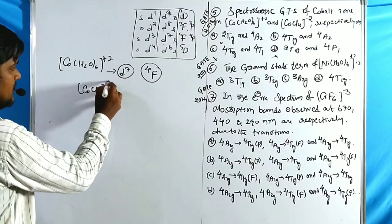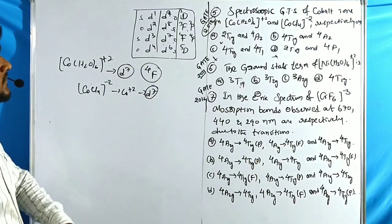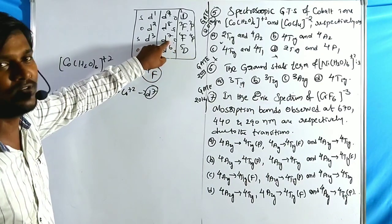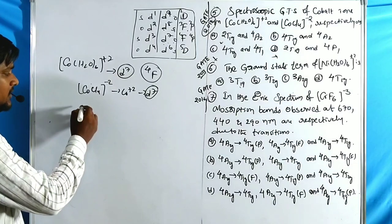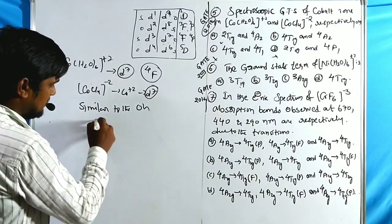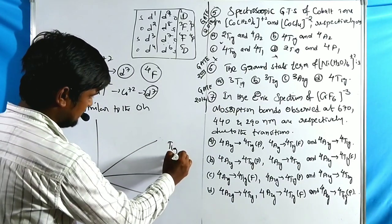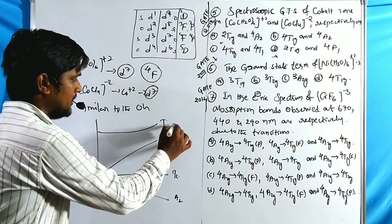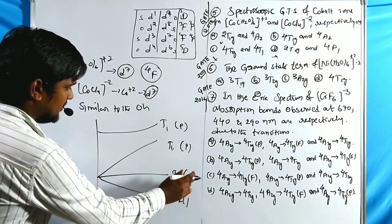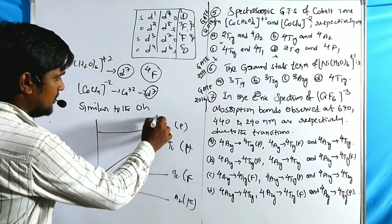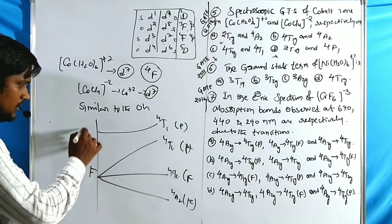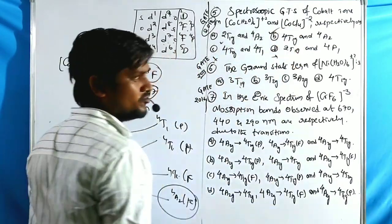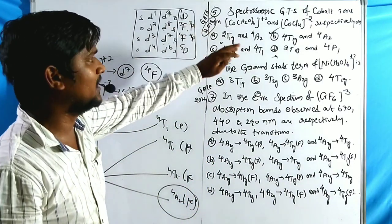For CoCl₄²⁻ (tetrahedral Co²⁺, d7): octahedral d7 is opposite to f-term, so tetrahedral d7 is opposite-of-opposite = similar to octahedral. In similar f-term splitting: t₁, t₂, a₂ with a₂ as ground term. Spin multiplicity is 4, so the ground term symbol for tetrahedral Co²⁺ is ⁴A₂. Option B is correct.